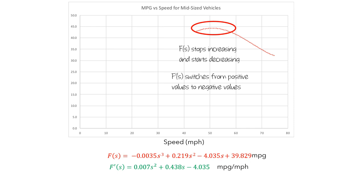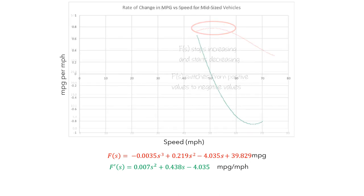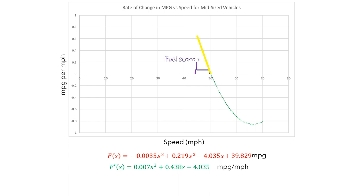This derivative is measured in miles per gallon per mile per hour. Here is a graph of f'(s). Here are some values of s where f'(s) is positive — when the car is traveling at any of these speeds, each additional mile per hour will increase the fuel economy. And here are some values of s where f'(s) is negative — when the car is traveling at any of these speeds, each additional mile per hour will decrease the fuel economy.